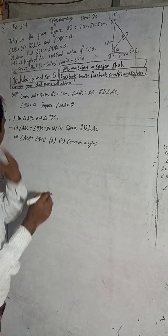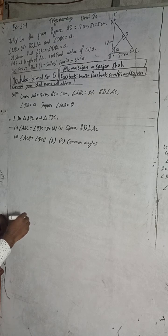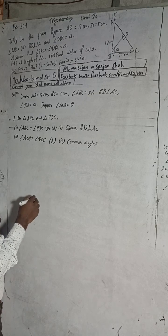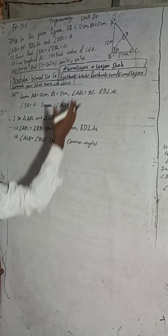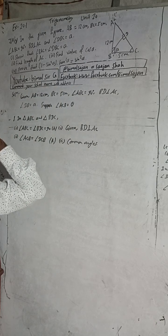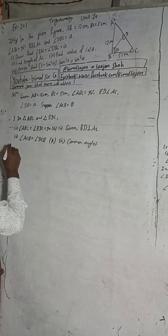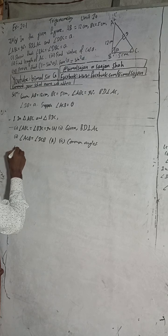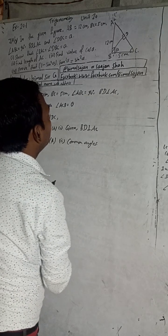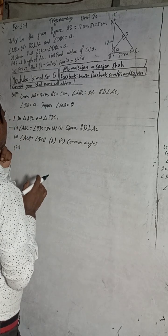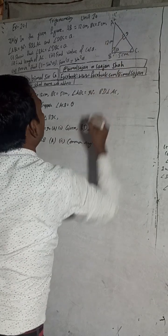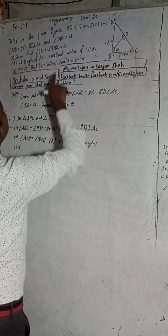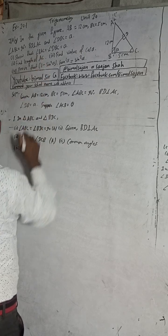So these triangles are similar — if two angles are equal, then the triangle is similar and the third angle will also be equal. For the third angle, we can write: angle BAC equals angle DBC.